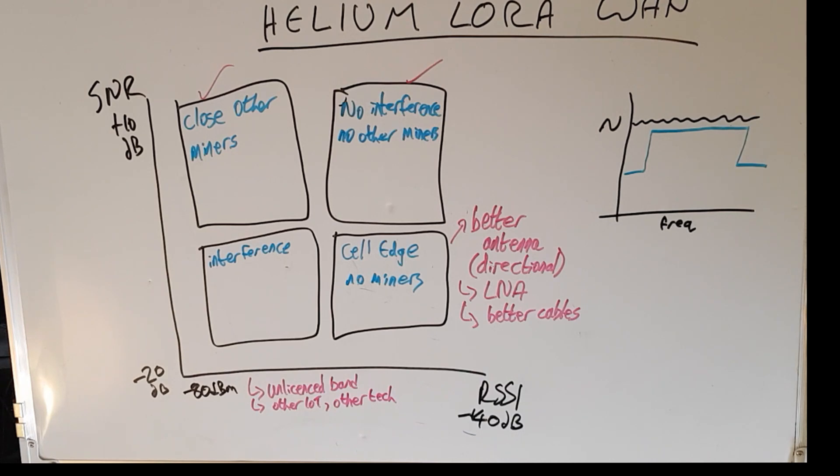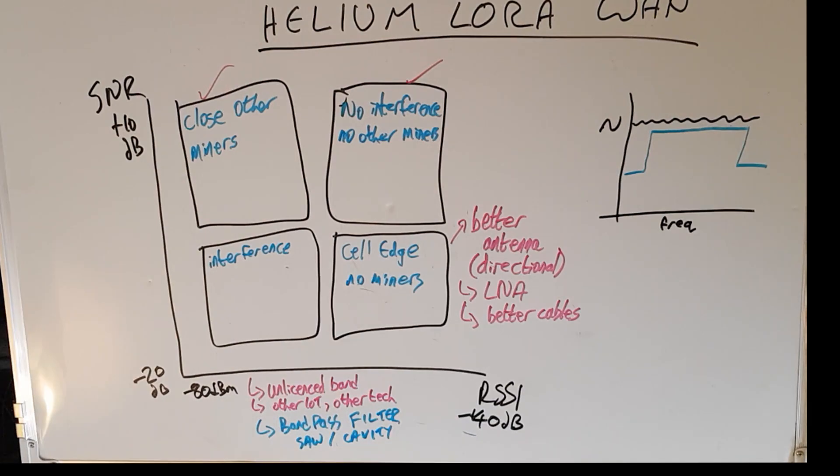Well the primary thing to reduce interference is to use a bandpass filter. You'll probably have heard of a SAW or cavity filters. Cavity are much better but they're way more expensive. So if you get yourself a better antenna, an LNA, a filter, better cables etc., how does that impact our diagram from before?